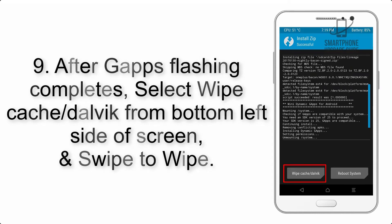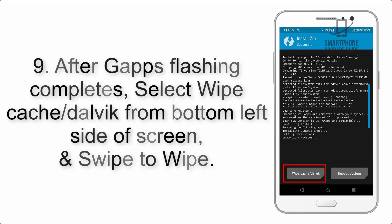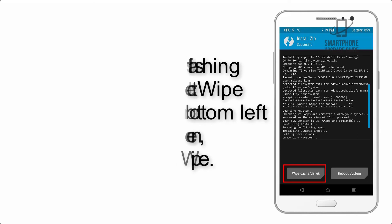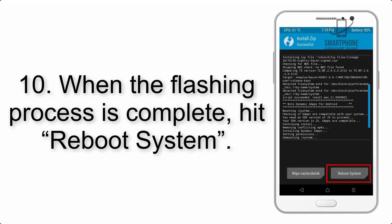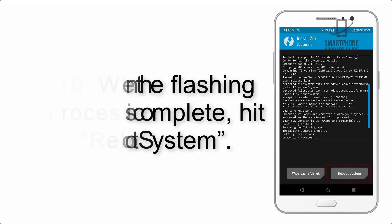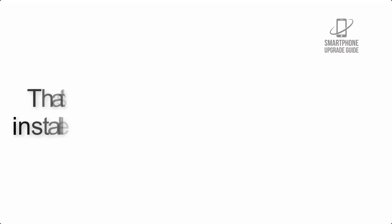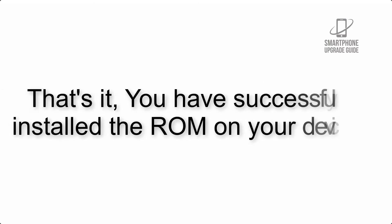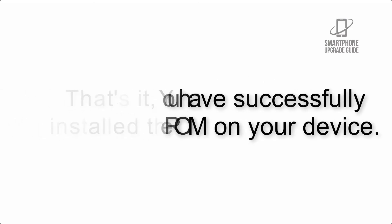Step 9: After GApps flashing completes, select Wipe Cache and Dalvik from the bottom left side of the screen and swipe to wipe. Step 10: When the flashing process is complete, hit Reboot System. That's it — you have successfully installed the ROM on your device.